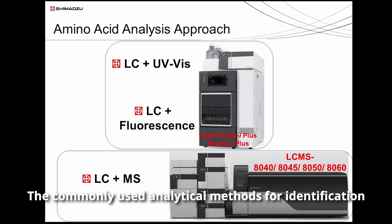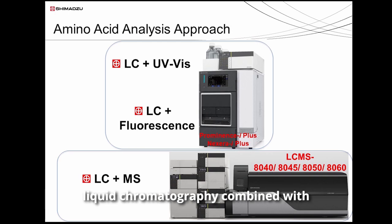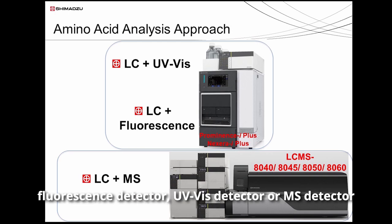The most commonly used analytical methods for identification and quantification of amino acids include high-performance liquid chromatography combined with a fluorescence detector, UV-Vis detector, or MS detector.